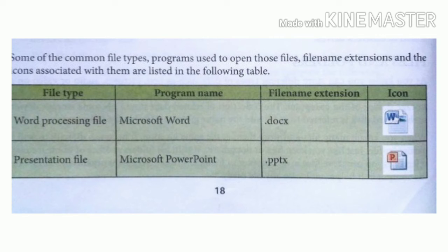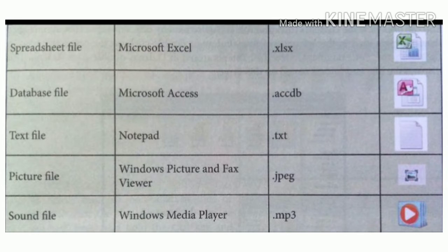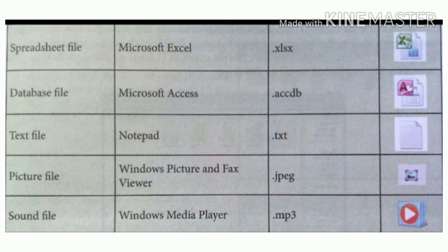A spreadsheet file — its program name is Microsoft Excel, and the file name extension is .xlsx; its icon is shown on the right side. Then, a database file — its program name is Microsoft Access, and the file name extension is .accdb; its icon is shown here.